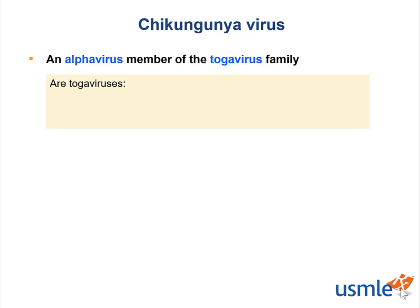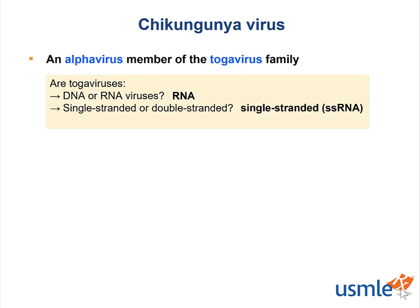Chikungunya virus is an alpha virus member of the toga virus family. What can you remember about toga viruses? Are they DNA or RNA viruses? They are RNA viruses. Are toga viruses single-stranded or double-stranded? They are single-stranded. In fact, all RNA viruses are single-stranded, except for reovirus, which is the only double-stranded RNA virus.